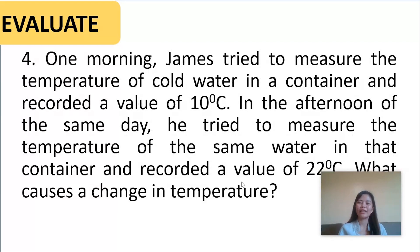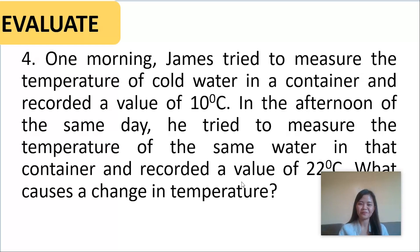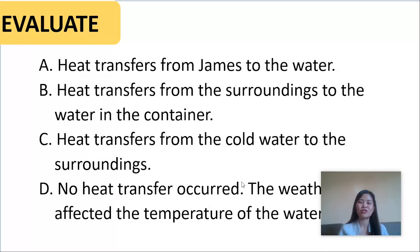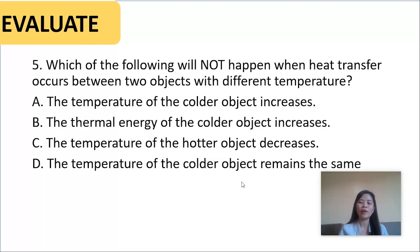Number four: one morning, James tried to measure the temperature of cold water in a container and recorded 10 degrees Celsius. In the afternoon of the same day, he measured the temperature of the same water and recorded 22 degrees Celsius. What caused the change in temperature? A — heat transfers from James to the water, B — heat transfers from the surroundings to the water in the container, C — heat transfers from the cold water to the surroundings, or D — no heat transfer occurred; the weather affected the temperature of the water.